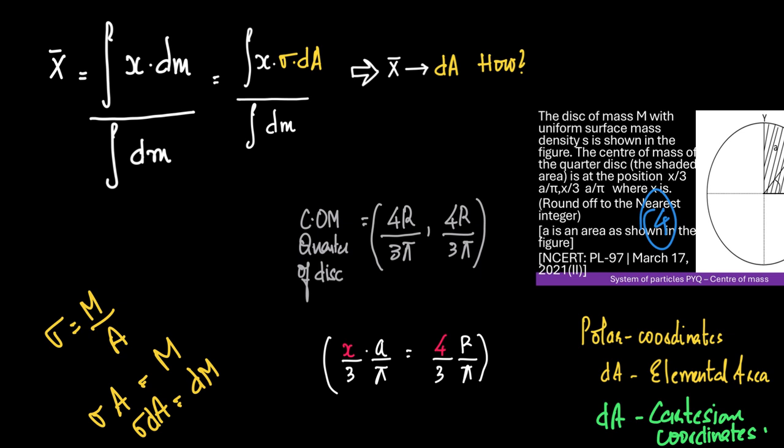And therefore, we can write x̄ as integral x σ dA by integral dm. Now, integral dm we know is the sum of all the masses present in the system, which will be equal to M. But what would be integral x σ dA?